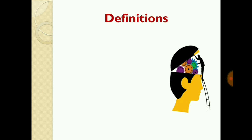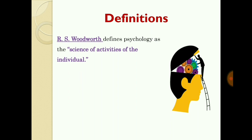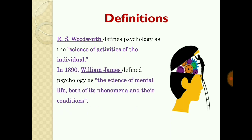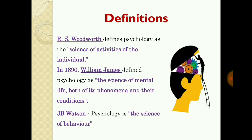The next part is the definitions of psychology. The first definition is given by William James in 1890. He defines psychology as the science of mental life, both of its phenomena and their conditions. Another scientist, J.B. Watson, defines psychology as the science of behavior. So these are the definitions of psychology.